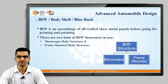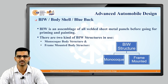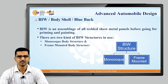This is the functional member which transfers the load, supports the load, supports the weight of the vehicle, supports the weight of the luggage, and supports the weight of passengers and goods if it is a goods-carrying vehicle. There are basically two categories of BIW: monocoque and frame mounted.